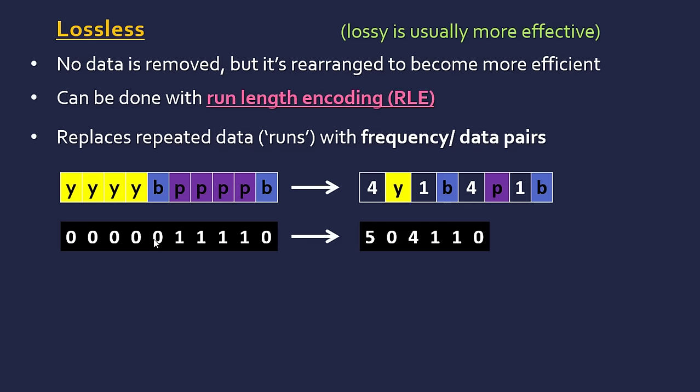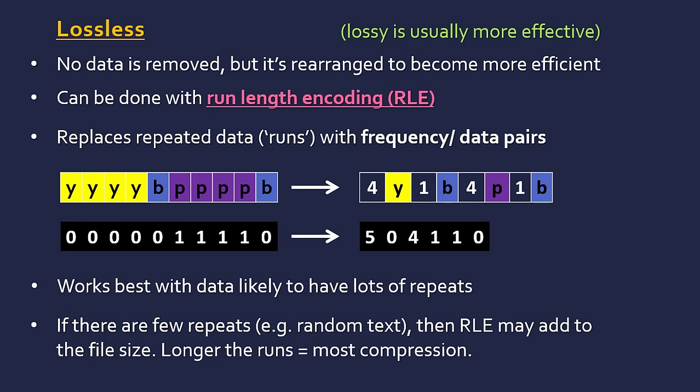It works best with data likely to have lots of repeats, like images or matrices. If there aren't many repeats—like random text or an image that is very varied or has complicated colors—this actually may add to the length of the data, so you've got to be careful. Generally, the longer the runs are, the more compression you get.